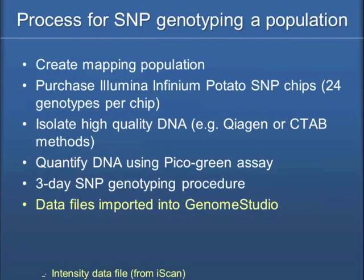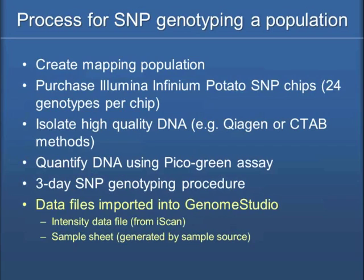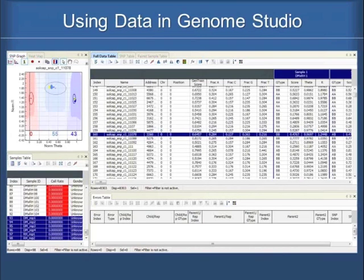Now we have the data files in hand, and what Dan will do is import them into Genome Studio. You need the intensity data file — it's a light intensity and color that's being read. There's a sample sheet that he creates so we can correlate the data with what was loaded on. And then there's a bead manifest file from Illumina that gives the location of all the beads and what SNPs are there, so that data file needs to be aligned with the intensity file to give the proper reads. He's taken these three data files and imported them into Genome Studio.